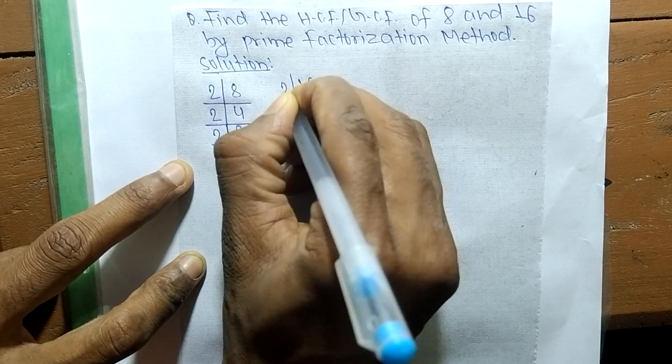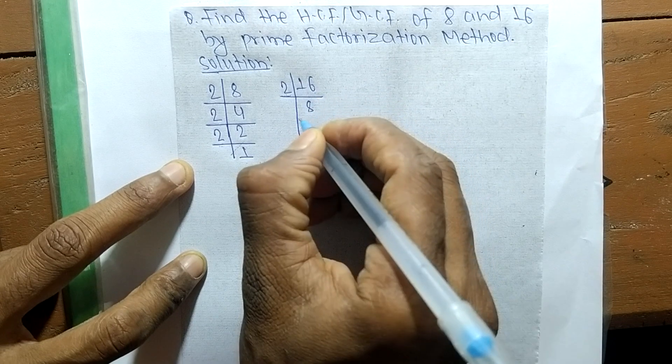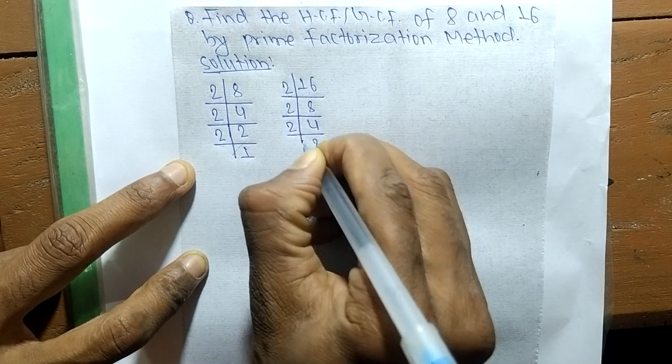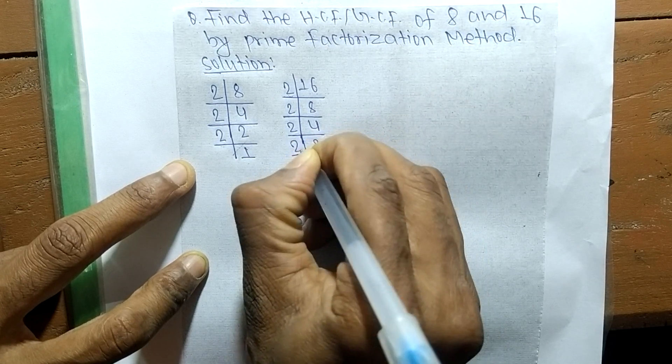The prime factors of 16 are: it is 2 times 8 means 16, 2 times 4 means 8, 2 times 2 means 4, and 2 times 1 means 2.